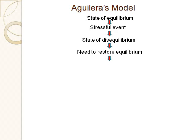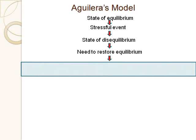According to Aguilera, whether or not you're able to restore equilibrium — get rid of the distress caused by the problem or return to some level of functioning — is determined by the presence or absence of three types of balancing factors. It's combinations of these factors that seem important, but Aguilera doesn't specify exactly what combination is optimal. It's not 'if you have all three you're good.' These are things to consider to help guide your intervention and assess the likelihood of somebody resolving a crisis. Importantly, they're not independent — each one affects and is affected by the others.